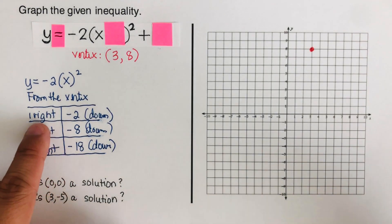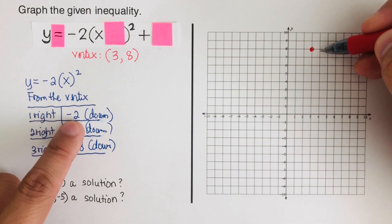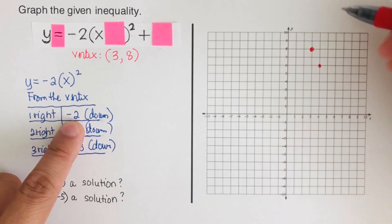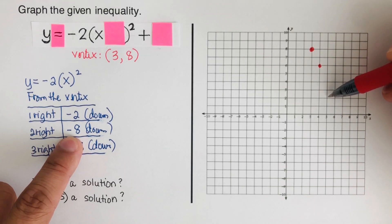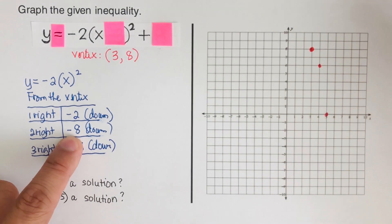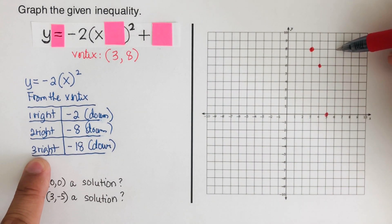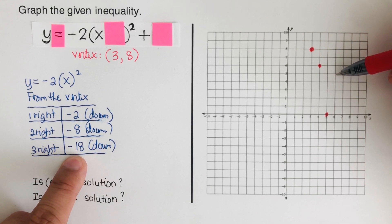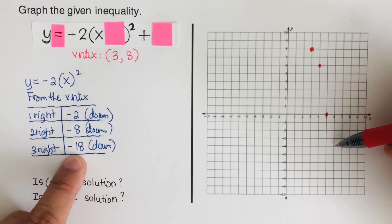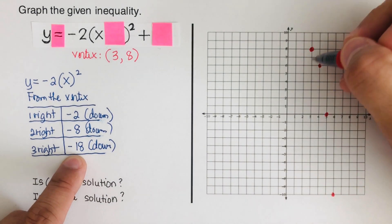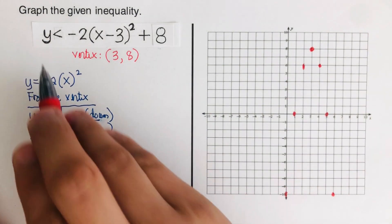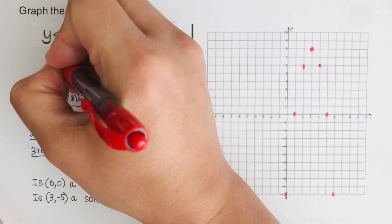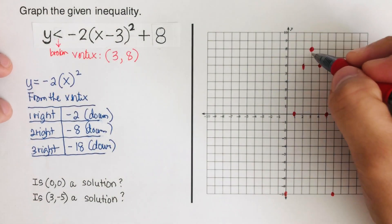We sketch the graph: from the vertex go 1 right and 2 down, then 2 right and 8 down, then 3 right and 18 down. We mirror the dots across the axis of symmetry. Since this is less than with no bar underneath, we use a broken line.